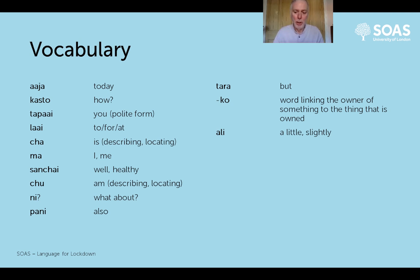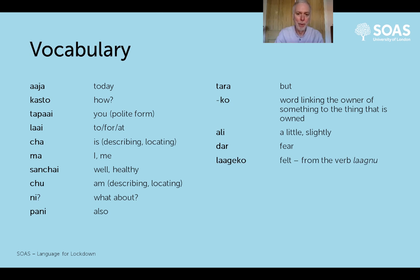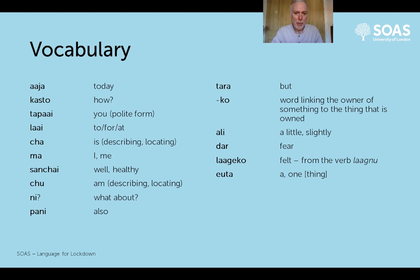'Ali' means 'a little' or 'slightly'. 'Dar', with this retroflex D with your tongue curled back up under the roof of the mouth, means 'fear'. 'Lageko' is a participle of the verb 'lagnu', which is a ubiquitous and very versatile verb that can mean to be felt, to affect, or to apply to something. So 'dar lagnu', 'dar lageko', means that the fear is being felt, is applying itself to you.